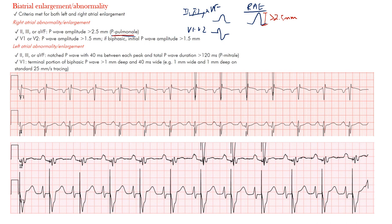In leads V1 or V2, you look at the initial portion of the P wave, and the amplitude should be greater than 1.5 millimeters. A memory trick: 2.5 millimeters is seen in lead II and 1.5 millimeters is seen in lead V1, so the numbers correspond to the leads.